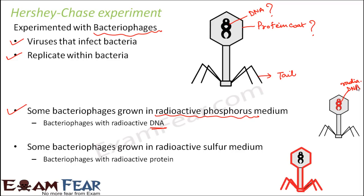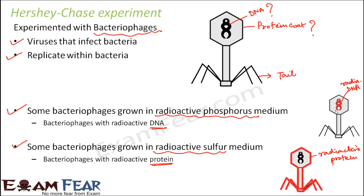There was another set of bacteriophages which were grown in a medium with radioactive sulfur. Sulfur is an important constituent of protein, and sulfur is not present in DNA. Therefore, these bacteriophages grown in radioactive sulfur medium will have radioactive protein. You can see the outer coat is all red because the outer coat is radioactive in nature — the outer coat has radioactive protein. So wherever you see red color, that is radioactive, and the black color is normal.